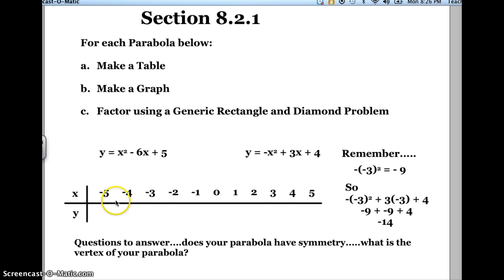And I want you to do that for each of these values when you make your table. You're going to have to plug in the values of negative 5 for x all the way to positive 5 for x. And then I want you to make a nice graph on the graph paper that I have for you, and then I want you to answer these questions.